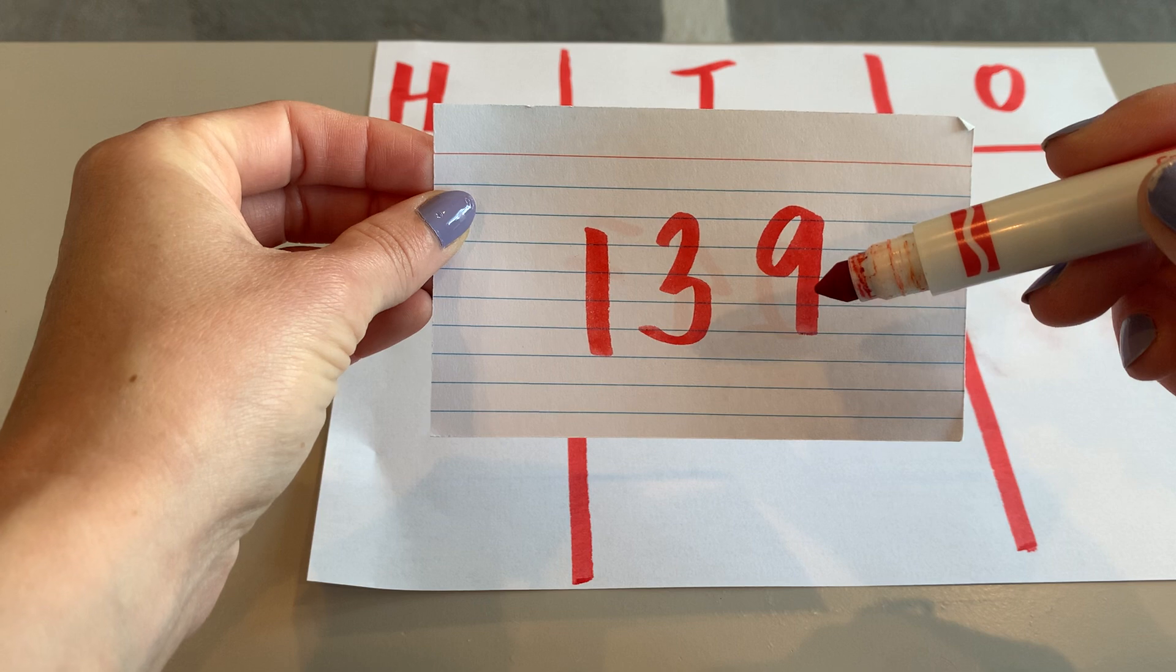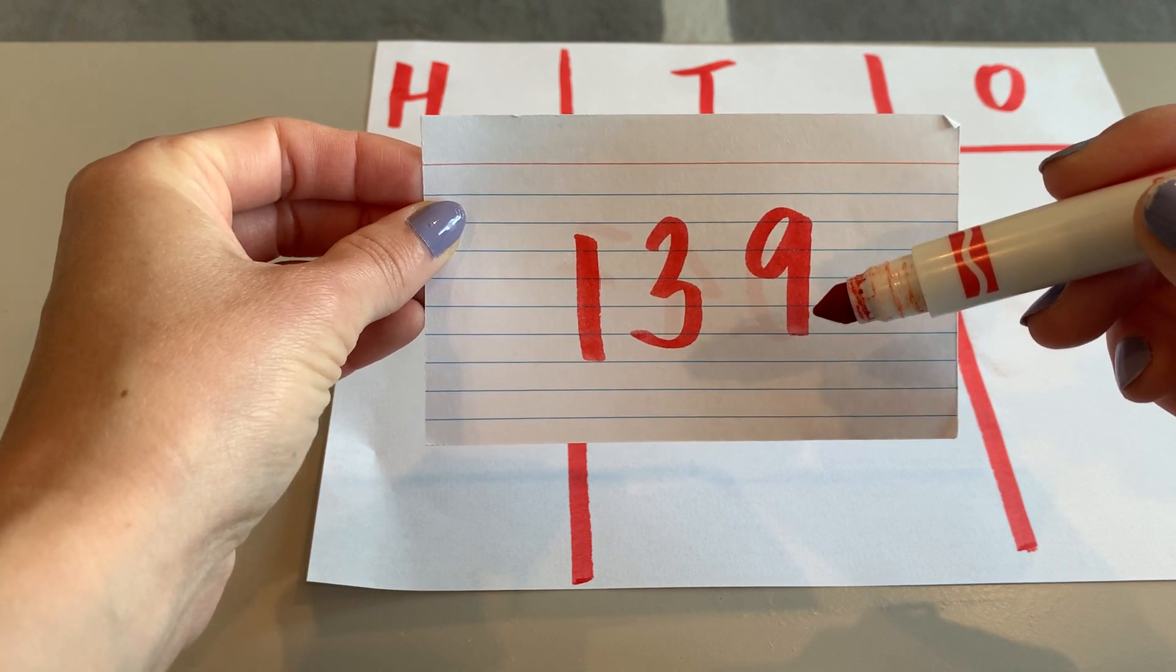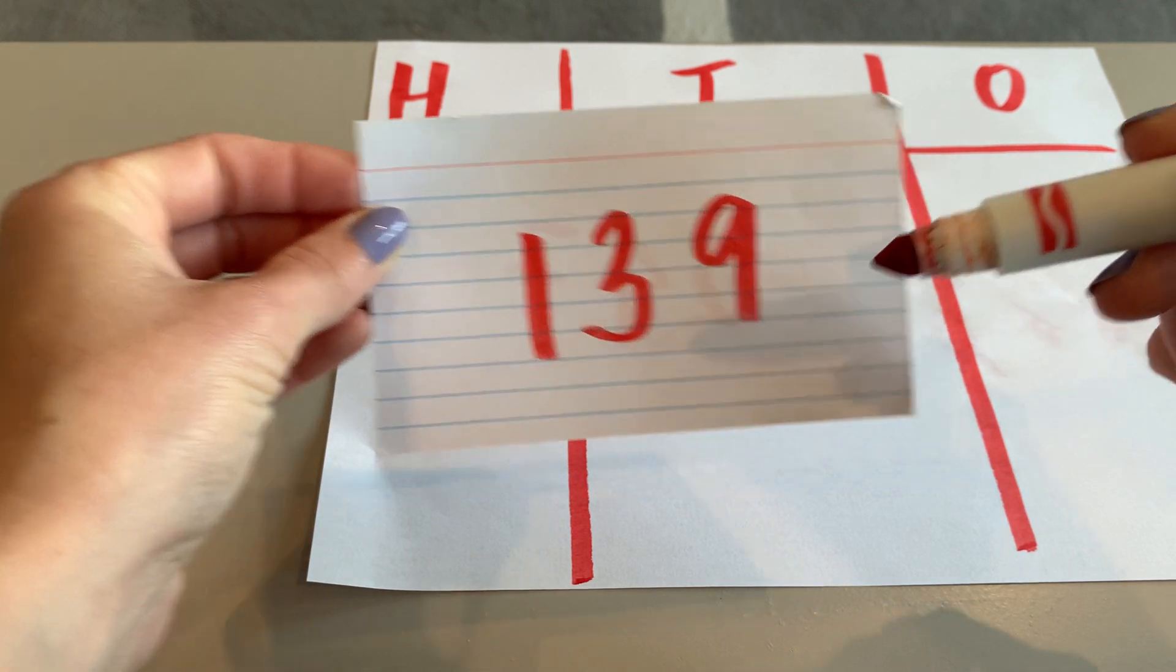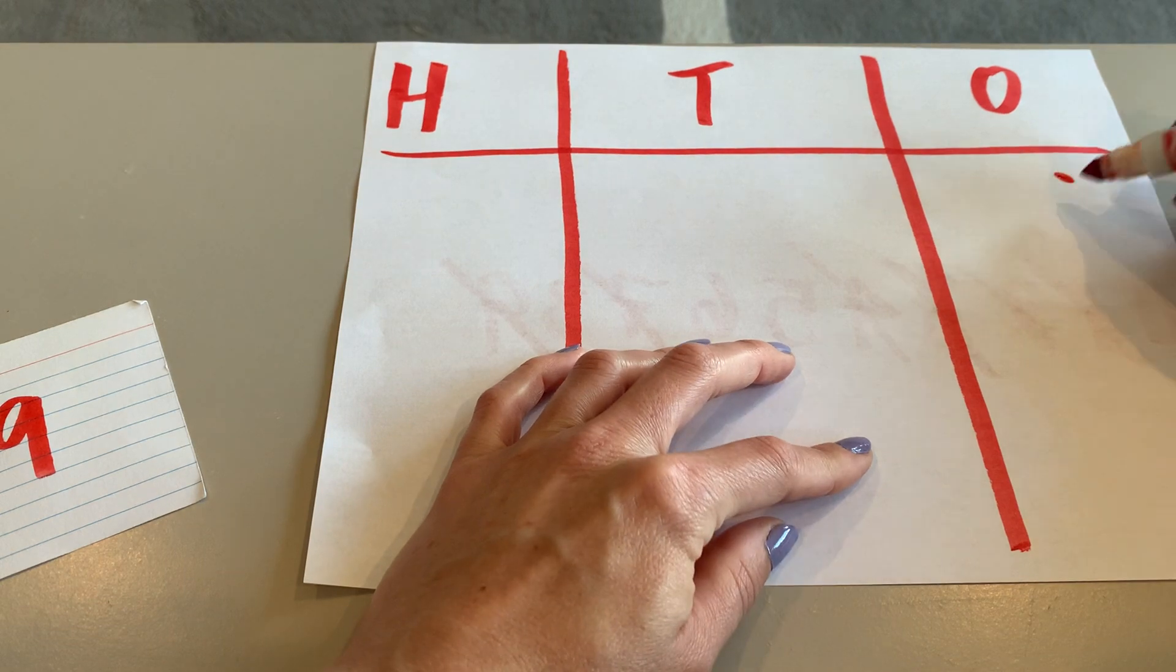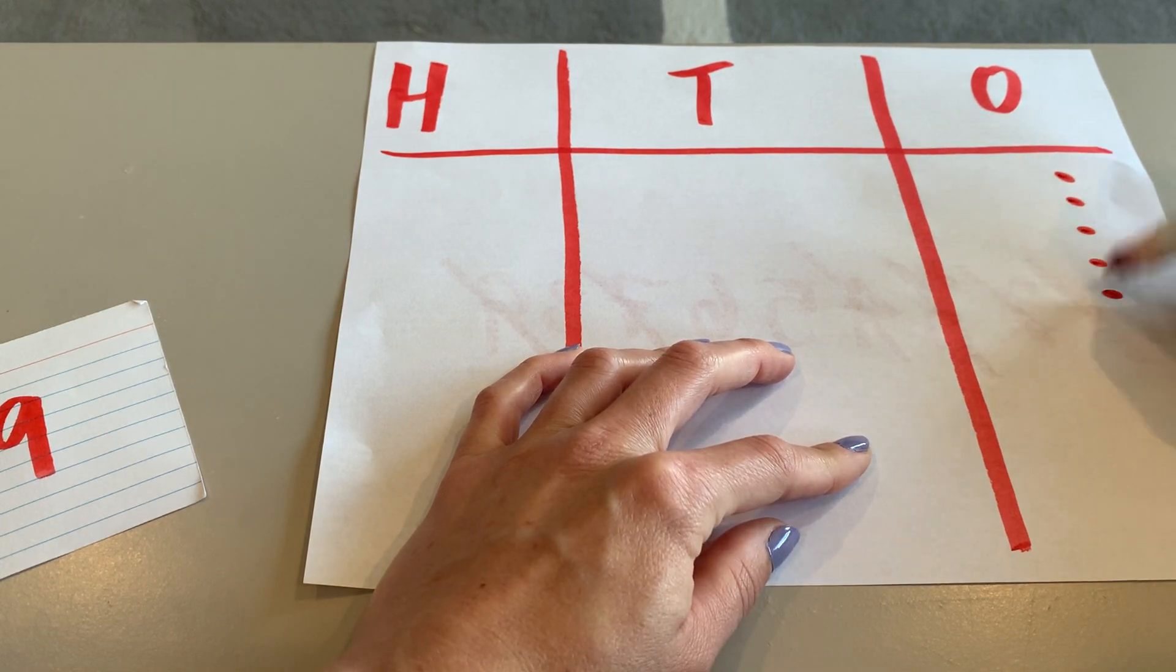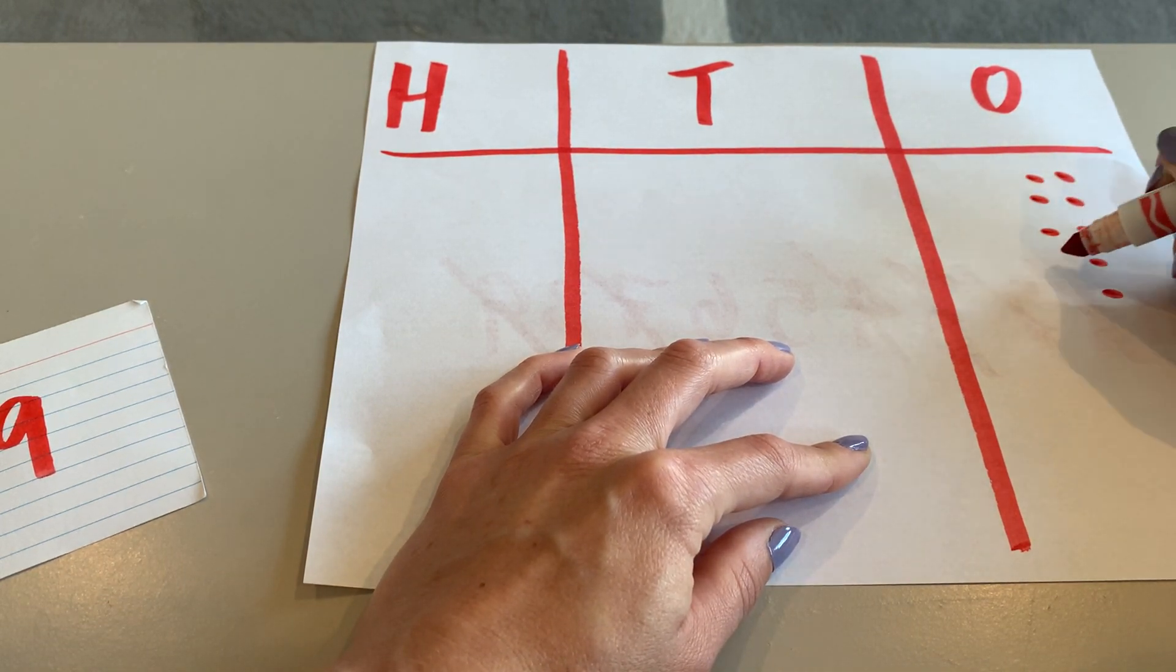The nine is the digit in the ones, so I'm going to draw nine ones units. One, two, three, four, five, six, seven, eight, nine.